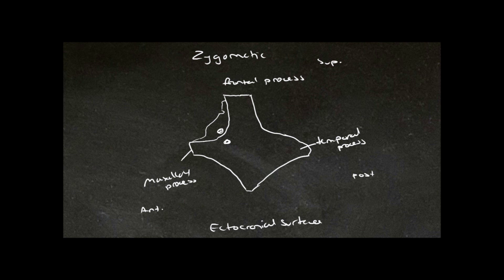To tell whether this is the ectocranial surface, we look for these two foramina. The first one on the outside of the bone is called the zygomaticofacial foramen, and the one that sits in the orbit is referred to as the zygomatico-orbital foramen.